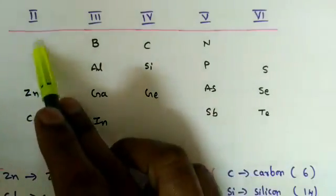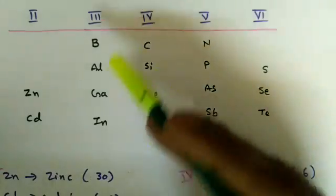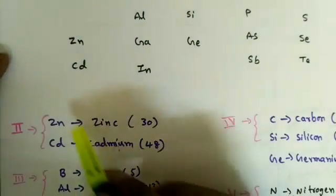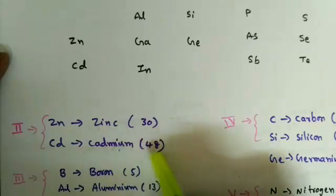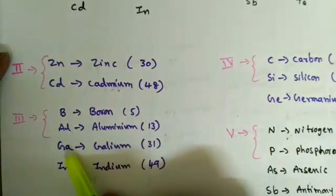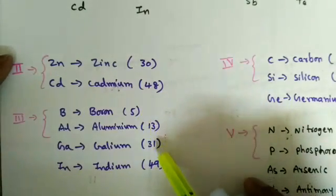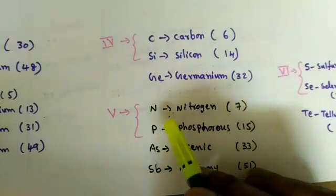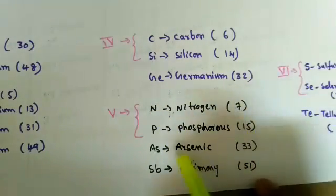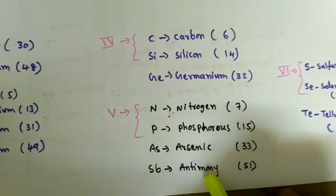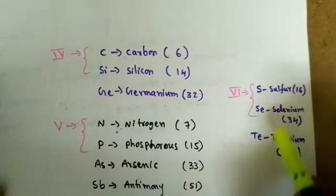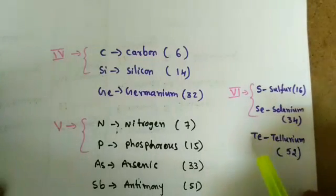The 4th group elements — silicon and germanium — behave directly as semiconductors. We can also make compound elements using 2nd and 6th groups, and 3rd and 5th groups, or combine silicon and germanium. The 2nd group has zinc (Zn, Z=30) and cadmium (Cd, Z=48). The 3rd group has boron, aluminium, gallium, and indium (Z = 5, 13, 31, 49). The 4th group has carbon, silicon, germanium (Z = 6, 14, 32). The 5th group has nitrogen (7), phosphorus (15), arsenic (33), antimony (51). The 6th group has sulfur (16), selenium (34), and tellurium (52).